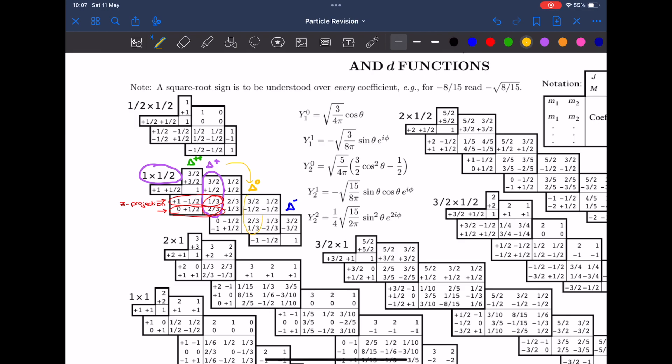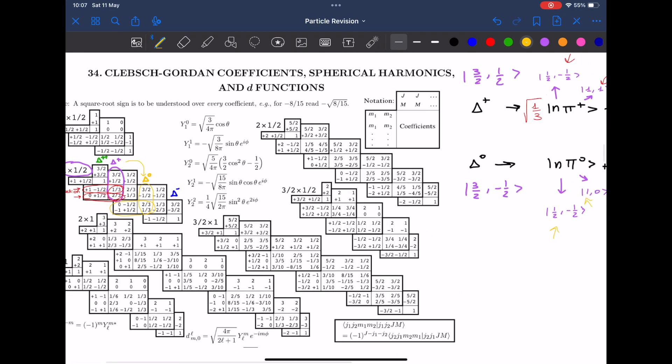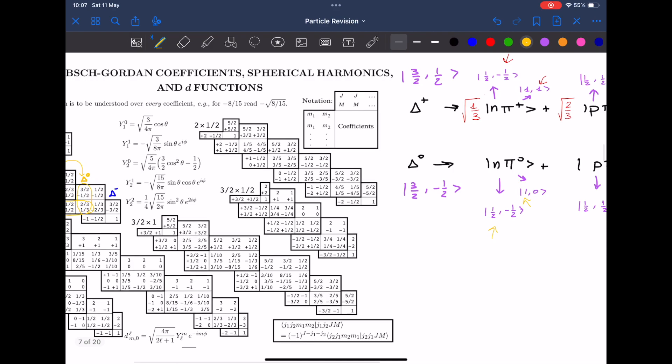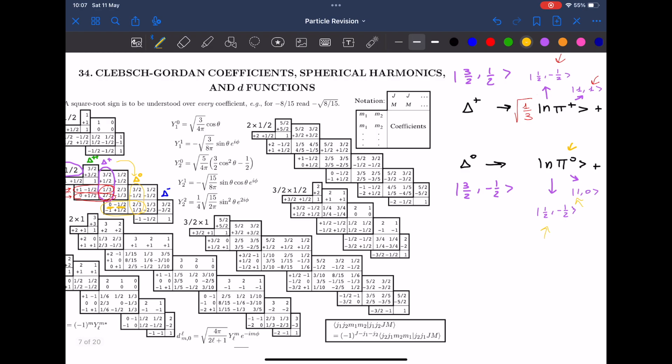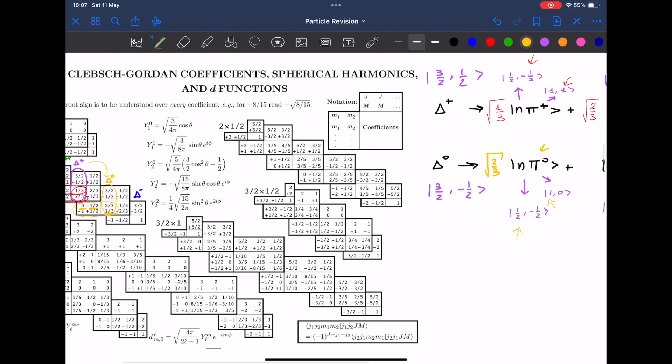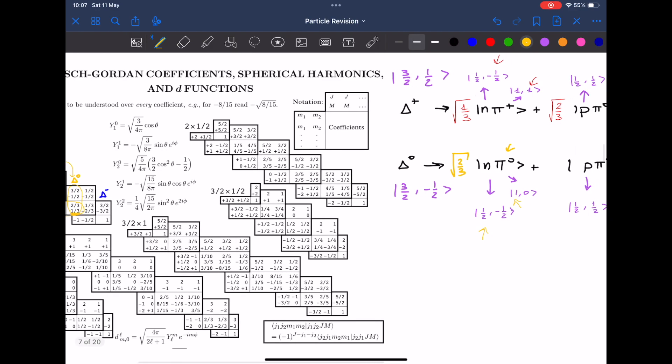So this is the column that we're looking at and these are the z projection, therefore these are our two probabilities. Now we need to differentiate which ones it is. The zero here corresponds to the z projection of the pion zero, therefore it will be for this decaying particle. Let's check with the z projection of the neutron, exactly minus a half, therefore it's correct. So it's root of 2 over 3 and the other one will therefore be root of 1 over 3.